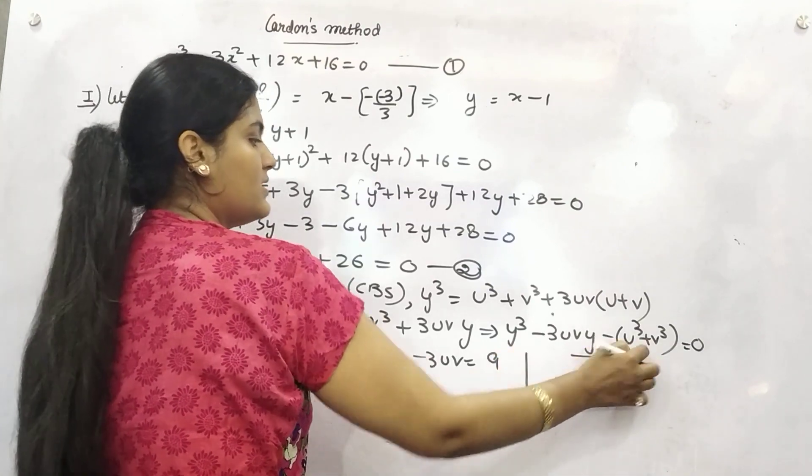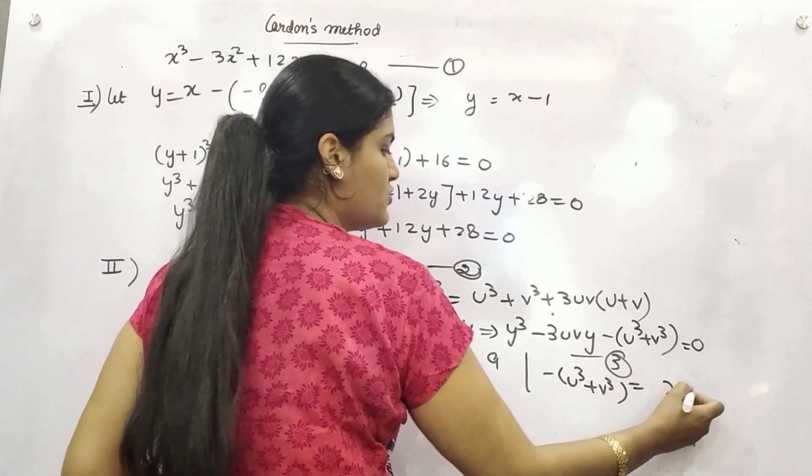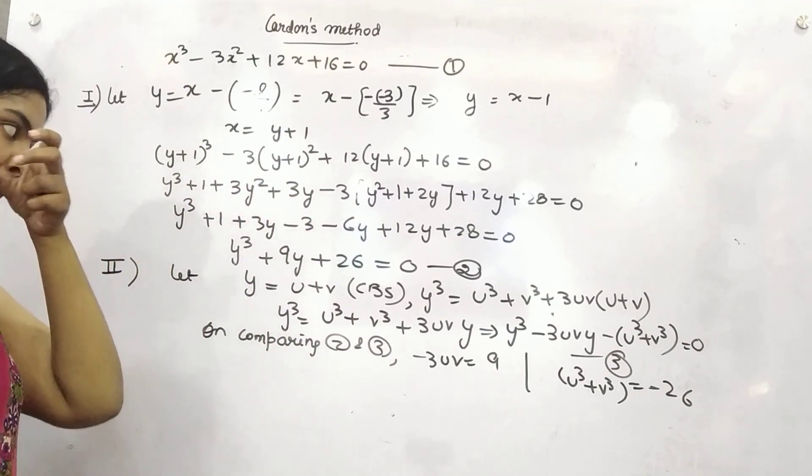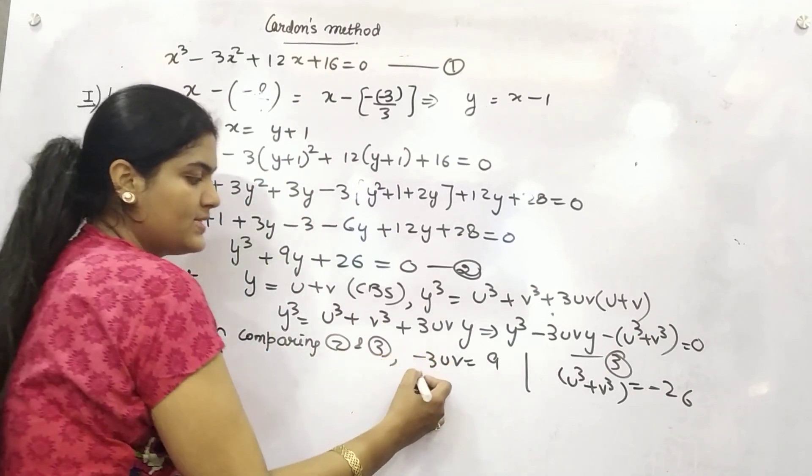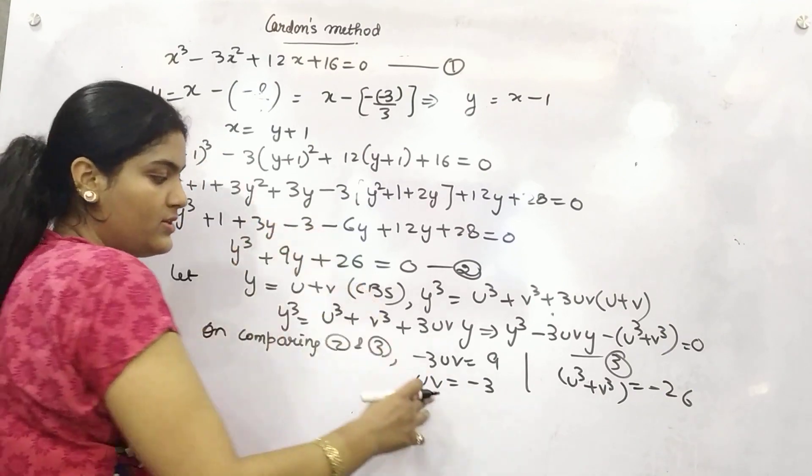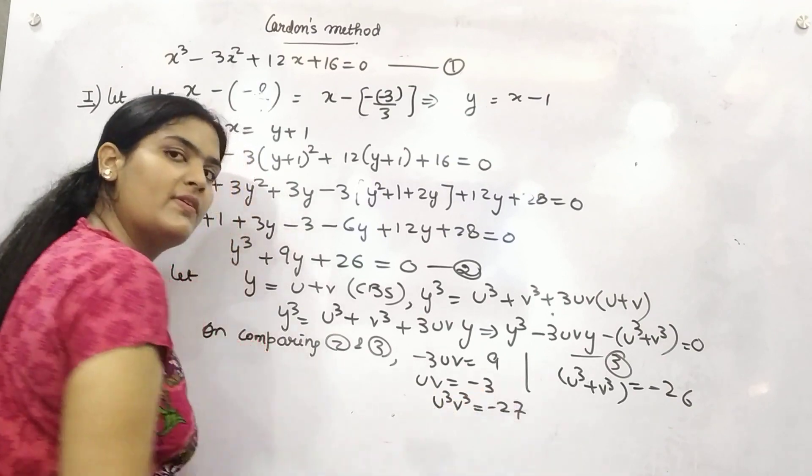Thereafter this is constant. So minus u cube plus v cube is equal to constant which is 26. This is minus 26. Now if you see uv will be minus 3. You can cube both sides. You can take u cube. u cube v cube is equal to minus 27.